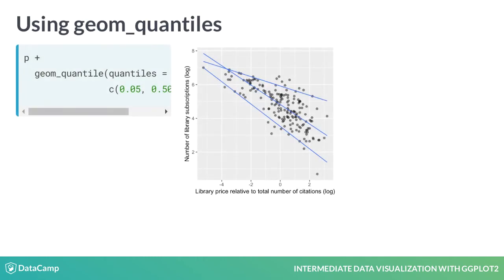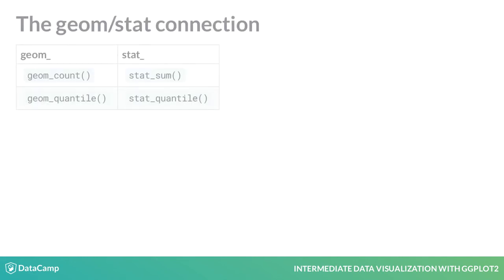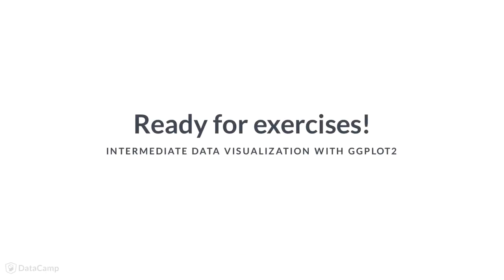Here, we can use geom_quantile to model the 5th and the 95th percentile, as well as the median — the 50th percentile. Just like the previous geomes, this is also associated with a stats function that we can actually call directly. Let's take these functions for a spin.